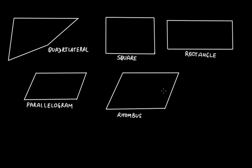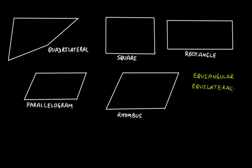Regular polygons are those polygons which are equiangular — it means all their internal angles are equal to each other, of the same value or measurement — and they are equilateral, that is all their sides are equal in measurement or equal in size.